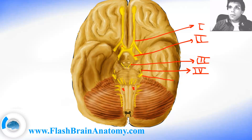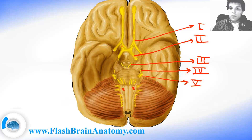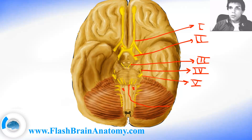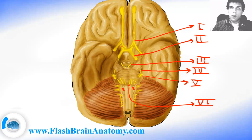The fifth cranial nerve is the trigeminal nerve. It is important for innervating the muscles of mastication and also receives sensation from the face. Then cranial nerve number 6 is called the abducens, and it innervates the lateral rectus muscle on the eyeball.